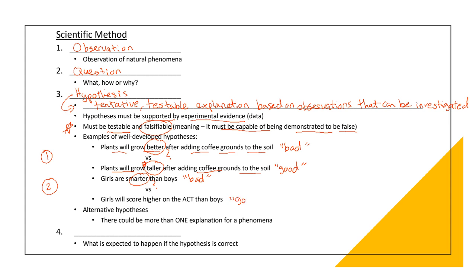This is going to be probably a better hypothesis. Girls will score higher on the ACT than boys. This can quantify a measure of smartness. If you score higher in a test, you're probably considered to be smarter. We can measure the scores on the ACTs and compare the scores between girls and boys.